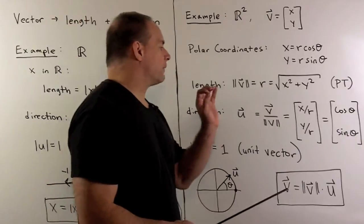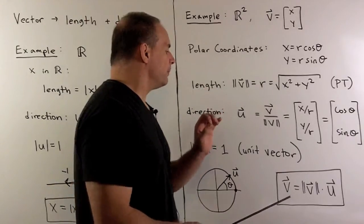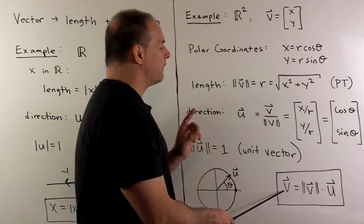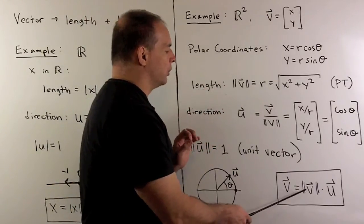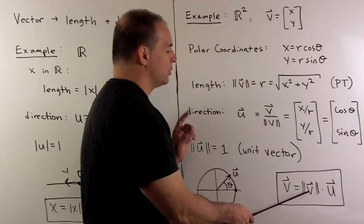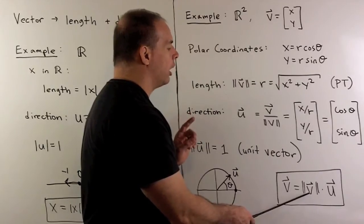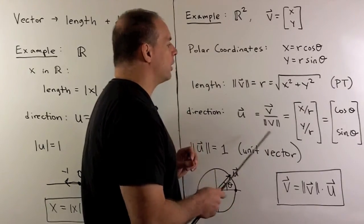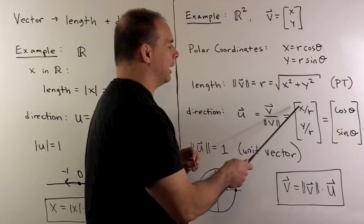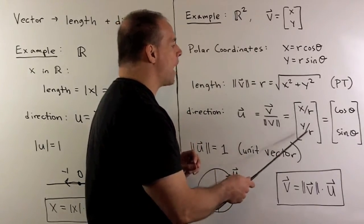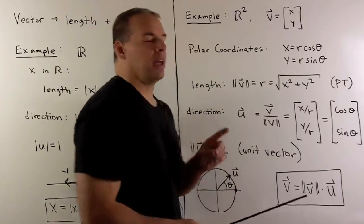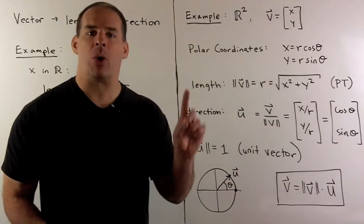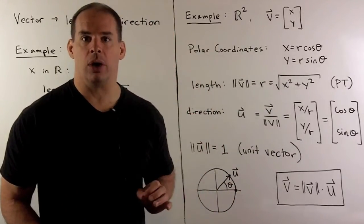Considering our factorization: our original vector is equal to its length r times the unit vector, which is just going to be (x/r, y/r). So we get back (x, y) if (x, y) is non-zero.